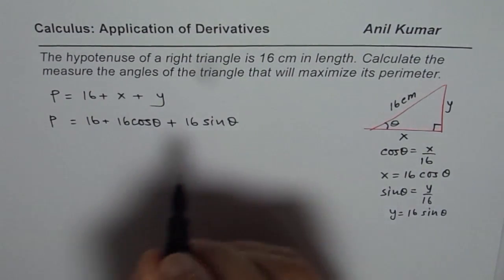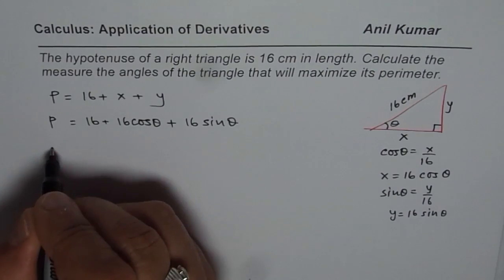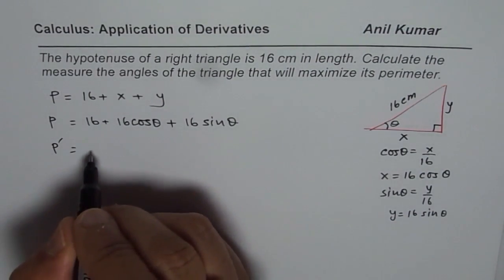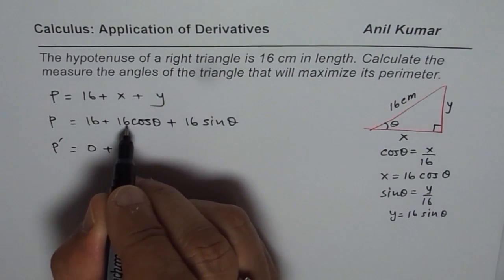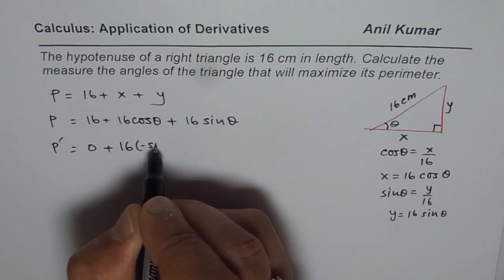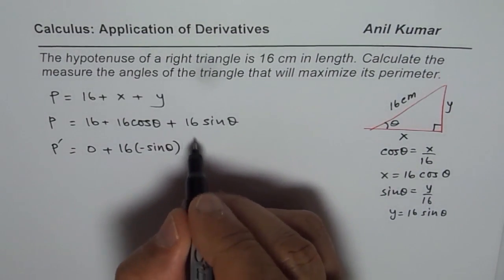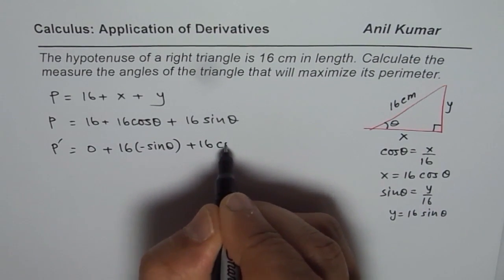That is the perimeter. So, let us maximize. That means we need to find derivative of this function. So, derivative of this perimeter will be, this is constant, 0 plus 16 cos theta, derivative is 16 times minus sin theta and 16 sin theta, derivative is 16 cos theta.